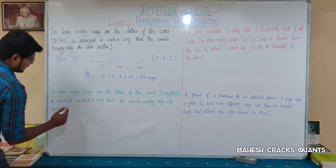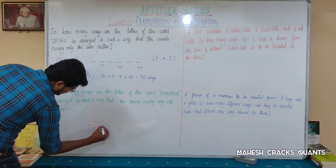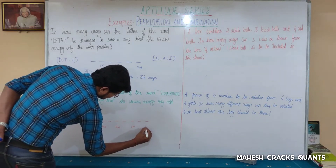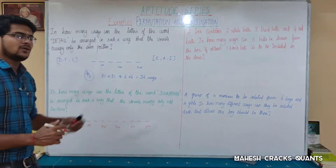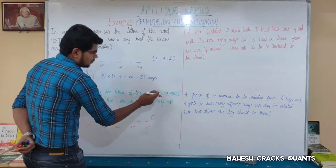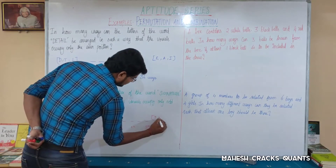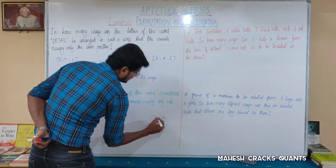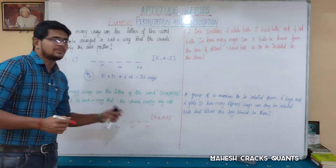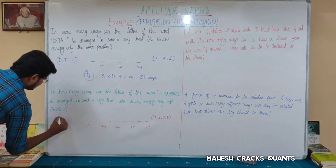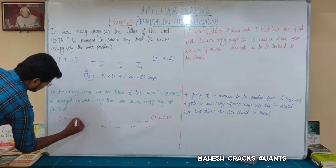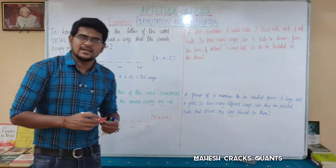Looking at the odd positions: 1st, 2nd, 3rd, 4th, and 5th odd positions — so there are totally five odd positions. The vowels in SIGNATURE are I, A, U, and E — that is four vowels. There are five odd positions available.